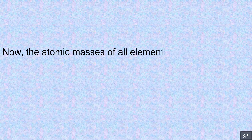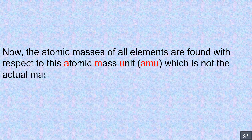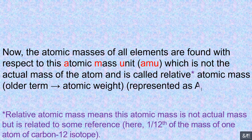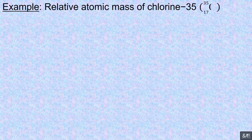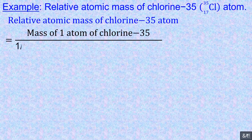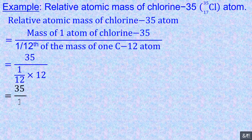The atomic masses of all elements are found with respect to this atomic mass unit U, which is not the actual mass of the atom and is called relative atomic mass — older term: atomic weight. Example: relative atomic mass of the chlorine-35 atom equals mass of one atom of chlorine-35 divided by one twelfth of the mass of one C-12 atom, which equals 35 divided by one twelfth times 12, equals 35 divided by 1, equals 35 U.